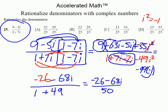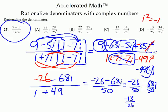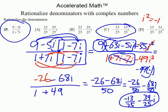On top we have negative 26 minus 68i, and the denominator is 50. This can reduce. We can split it: negative 26 over 50 minus 68i over 50, because the denominator goes with both items in the numerator. Dividing everything by 2: 2 goes into negative 26 negative 13 times, and 2 goes into 50 giving 25, then 2 goes into 68 giving 34. So the answer is negative 13 over 25 minus 34 over 25i — that's letter C.